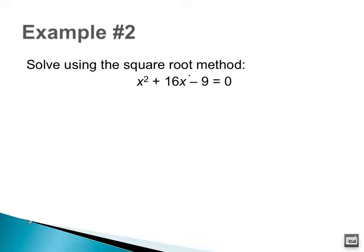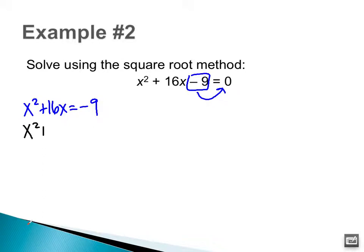First thing I want to do is move this negative 9 over to the other side — I want all my x's on one side and the constant on the other side. That's going to leave me with x² + 16x = 9. Now in order to complete the square, I'm going to add something to both sides, so I'm going to rewrite this leaving a blank for whatever I plan to add.